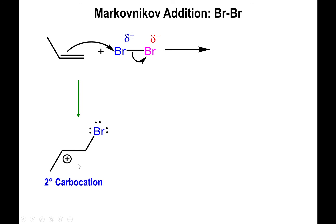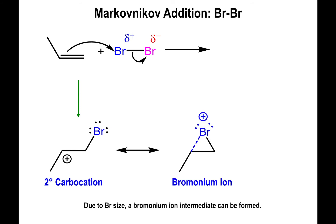Attaching to the carbon with the most hydrogens would create a secondary carbocation, but because bromine is large enough to sit on both carbons simultaneously, that is exactly what it does. It stabilizes the carbocation that would have formed using its lone pairs, creating a bromocyclopropane structure known as a bromonium ion. This intermediate carries a positive charge because bromine is donating partially one of its lone pairs to stabilize that carbocation.